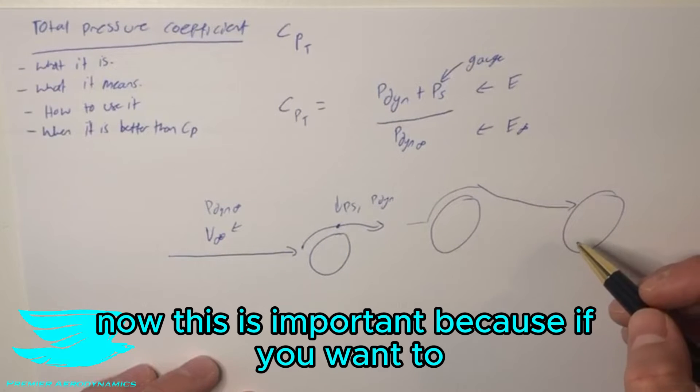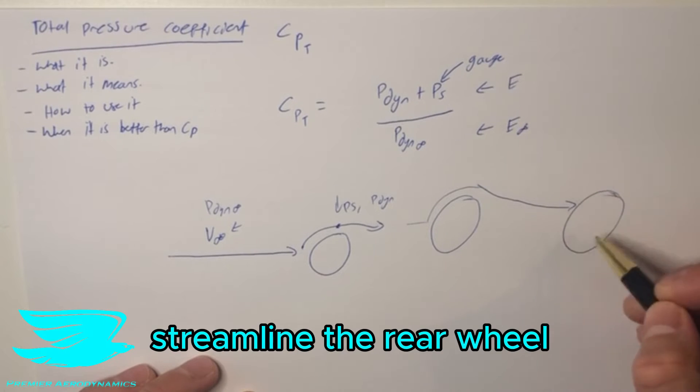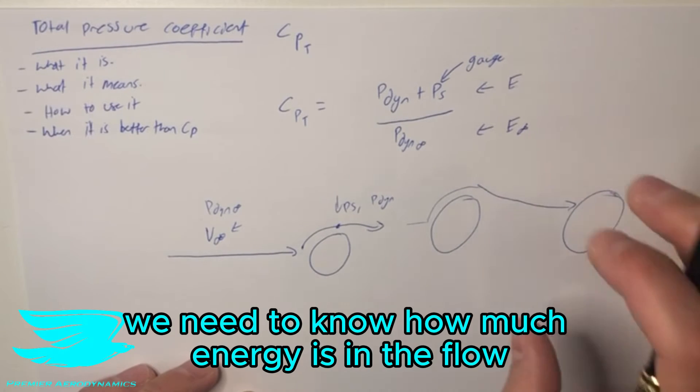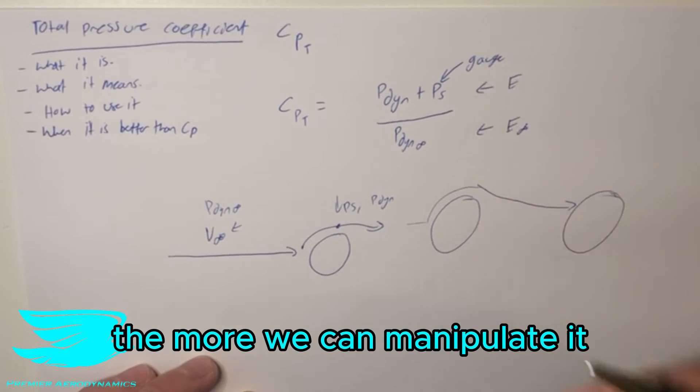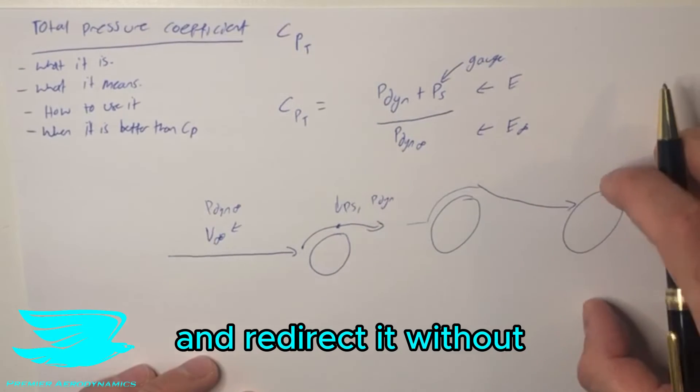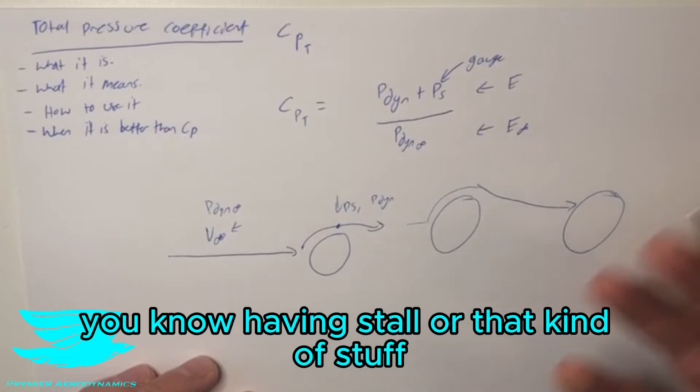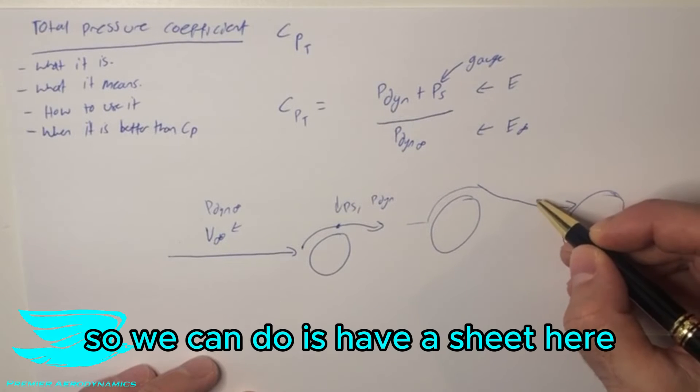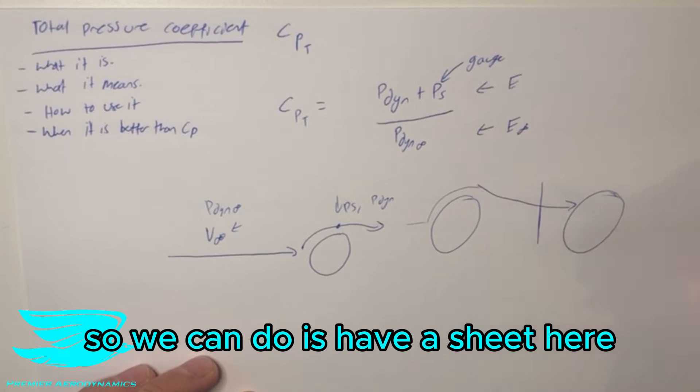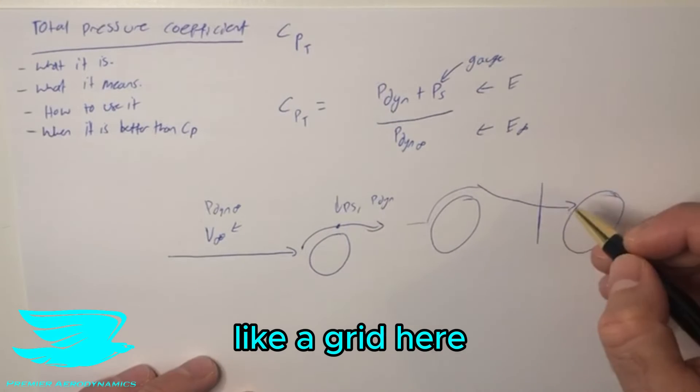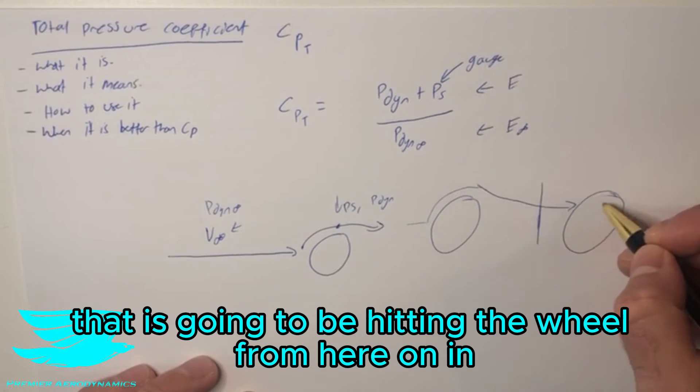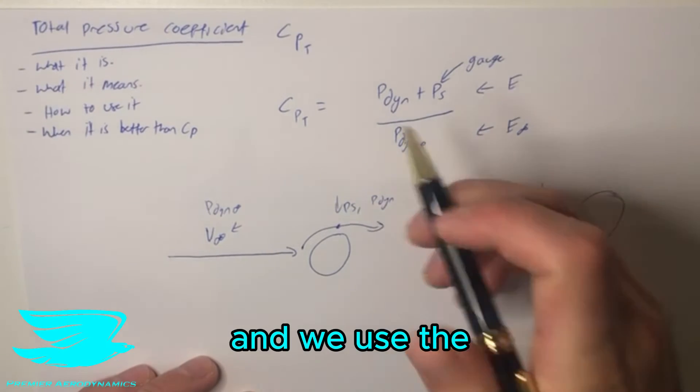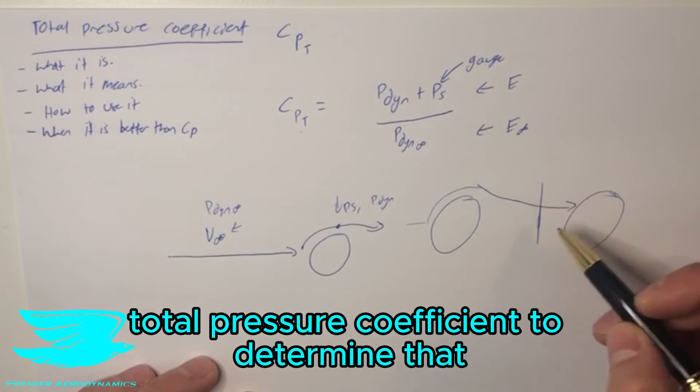Now this is important because if we want to streamline the rear wheel and reduce the drag as much as possible, we need to know how much energy is in the flow because the more energy that is in the flow, the more we can manipulate it and redirect it without having stalled flow. So what we can do is have a sheet here, like a grid here that we are taking measurements along and calculating how much energy we have in this point that is going to be hitting the wheel from here on in. And we use the total pressure coefficient to determine that.